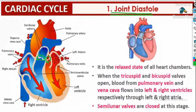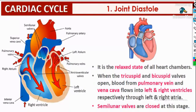So in joint diastole, the tricuspid and bicuspid valves open to pump blood from the right and left auricles simultaneously into the ventricles, and the semilunar valves remain closed. Any doubts on joint diastole, feel free to ask.